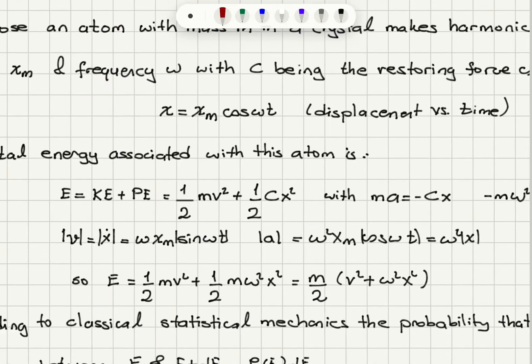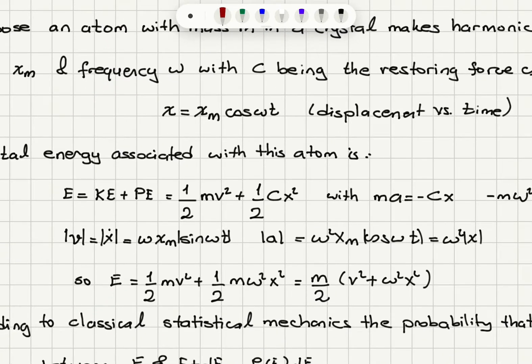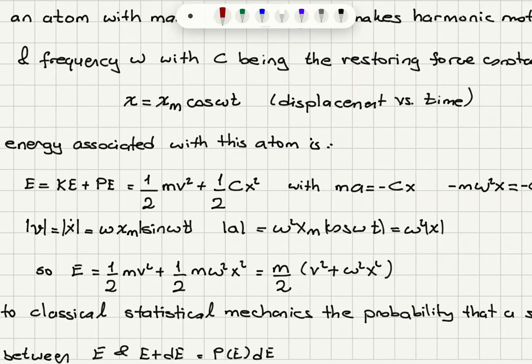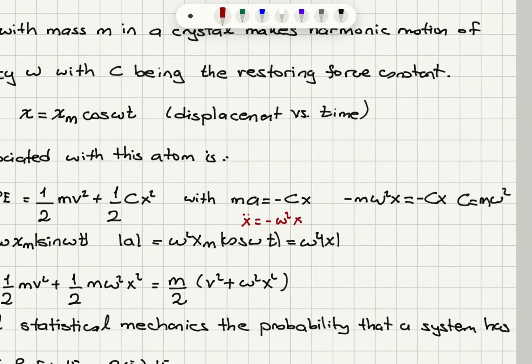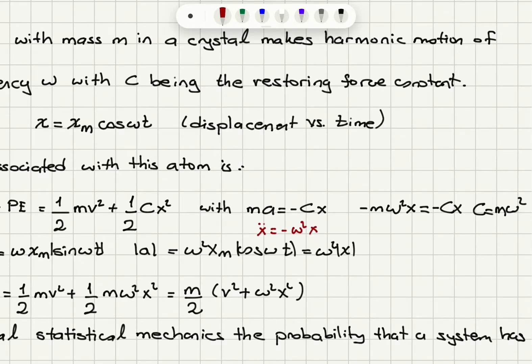If we write the total energy of this atom, there is the kinetic energy, one half mv squared, and potential energy, one half cx squared. The equation of motion is simple harmonic motion: x double dot equals minus omega squared x. So acceleration is minus c over m times x, and we find that c is m omega squared. This is our force constant.